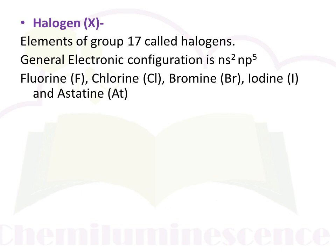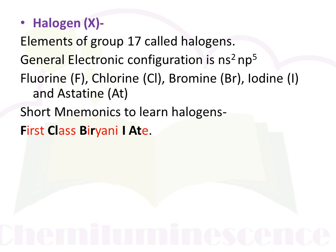If you already know the Group 17 element names and symbols, that is very good. But if you don't know them, I am giving you a short mnemonic to memorize Group 17 elements. If you memorize this small sentence, you will be able to write the symbol of each halogen and from that symbol write the name of the element. The short mnemonic is: 'First Class Biryani, I-8.'